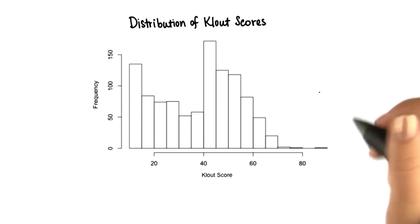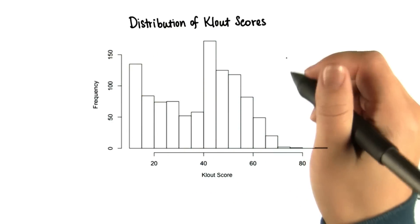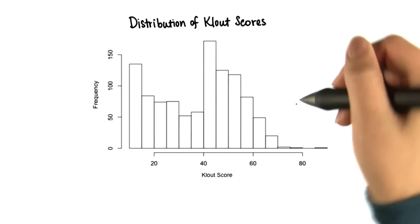Welcome back. Let's do a quick summary of what you learned in lesson 7. So we started with a population, in this case clout scores.